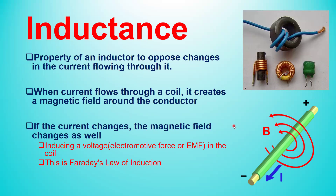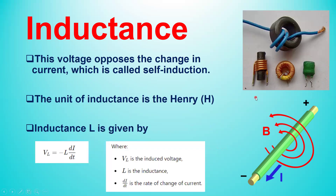This voltage or electromotive force, in short EMF, in the coil — all this phenomena is called Faraday's Law of Induction. The voltage that has been produced and is now changing will oppose the changes in this current. If there are changes in the current, there is a change in the magnetic field, and therefore a change in the induced EMF. This induced EMF or produced voltage will oppose the change in this current. This is called self-induction.